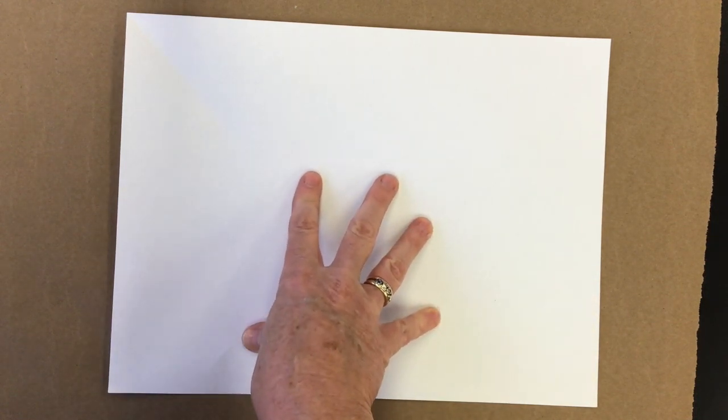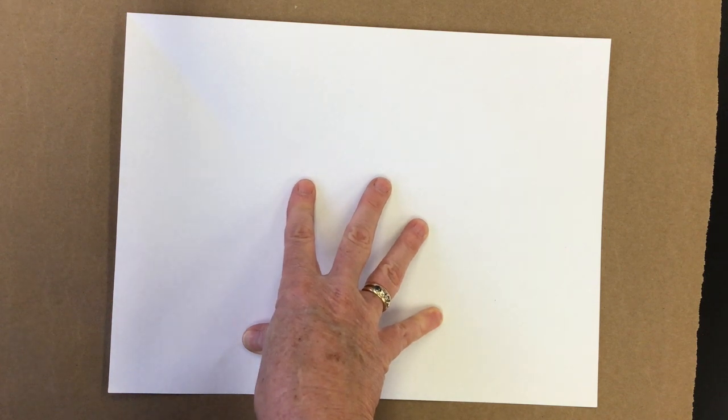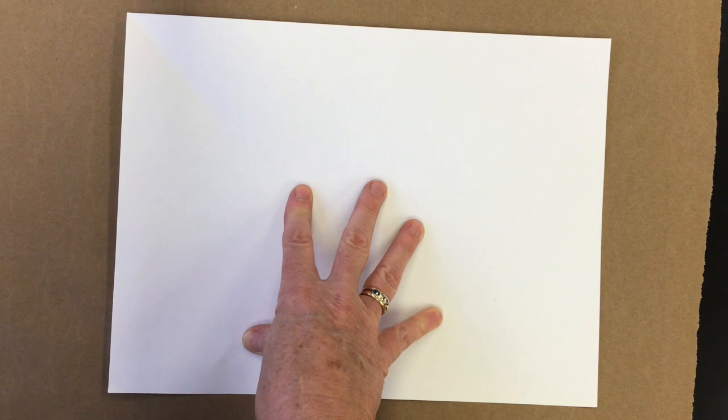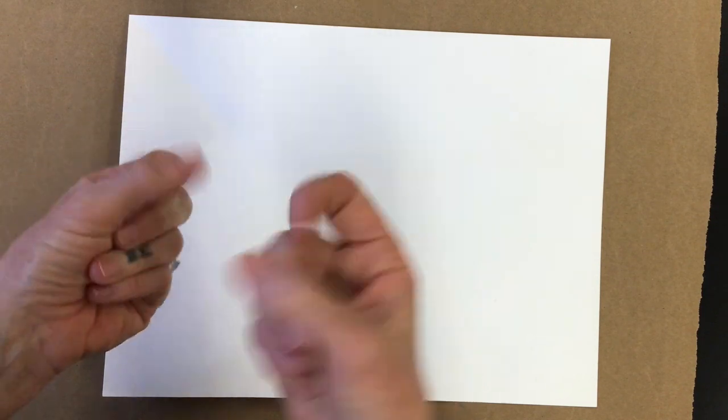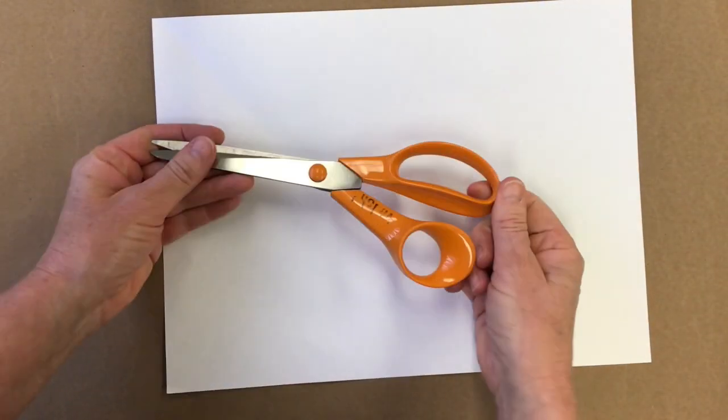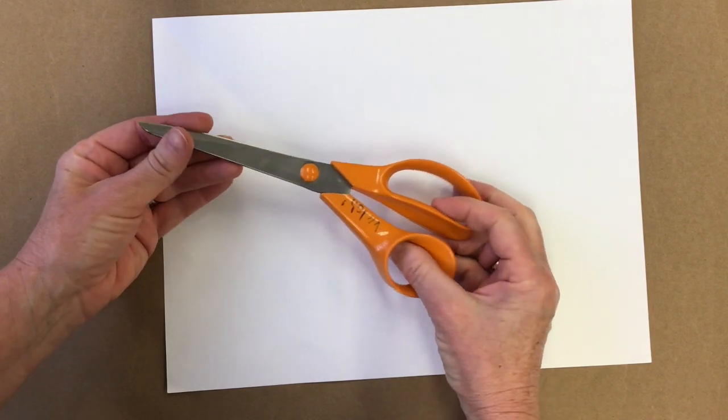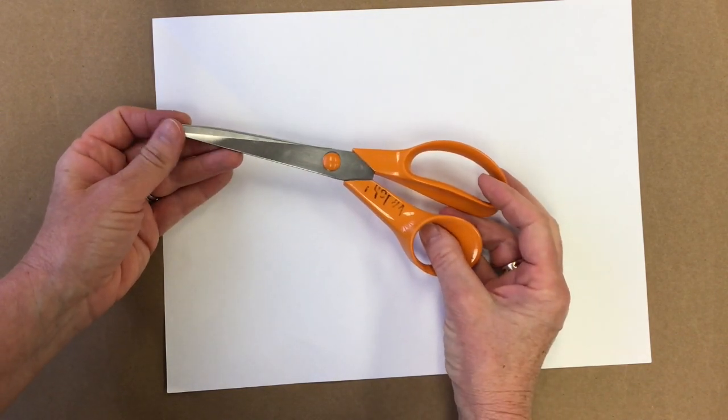So if you ever need to make a square piece of paper out of a rectangle, this is the easiest way to do it. You don't need a ruler. You don't need anything special. Just your two hands and a pair of scissors. If you don't have scissors, you can still make a perfect square. You just have to tear the paper very carefully on the crease that you make.